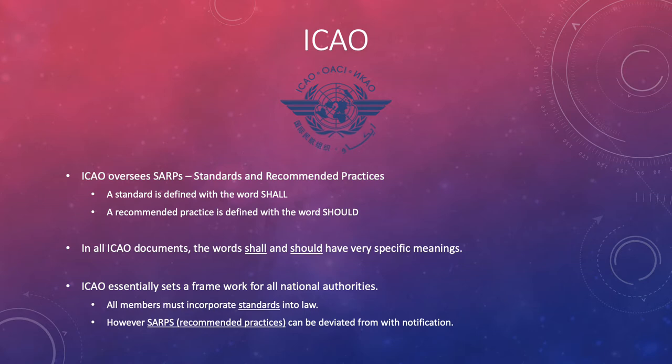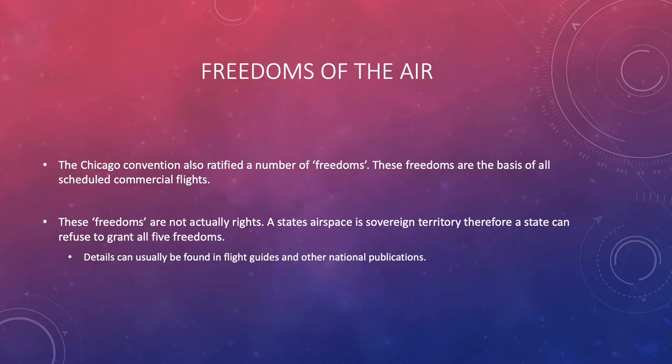We're going to look at something called the Freedoms of the Air. During the Chicago Convention, part of what they discussed was the flying of, to, and from other countries. This is known as the Freedoms of the Air — what each country can do, where they can fly to and from, without any limitations. These are not actually rights but grants that all countries are allowed. There are five different freedoms, each with its own parameters, which we're going to look at next.